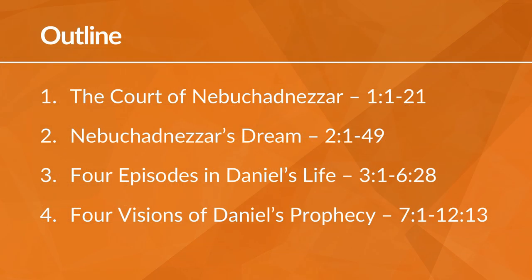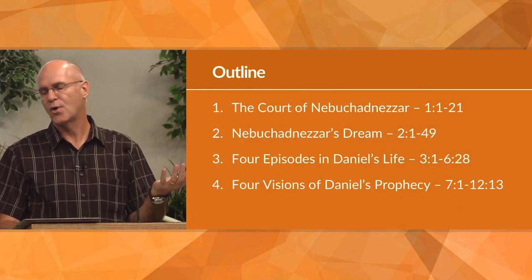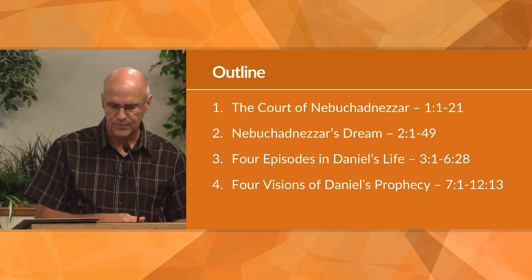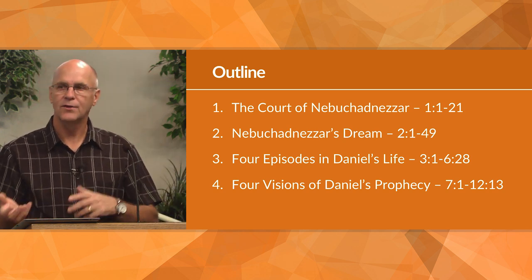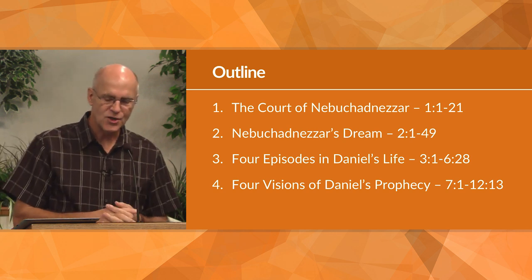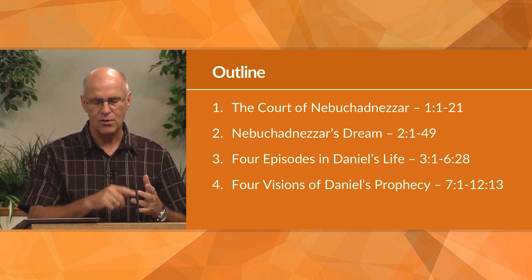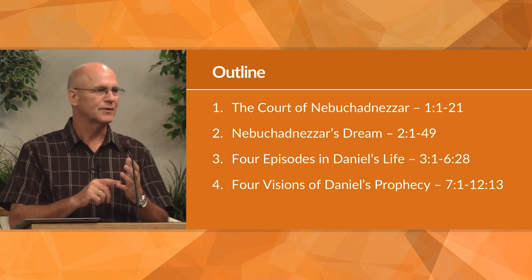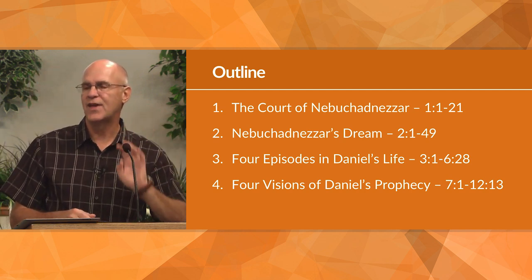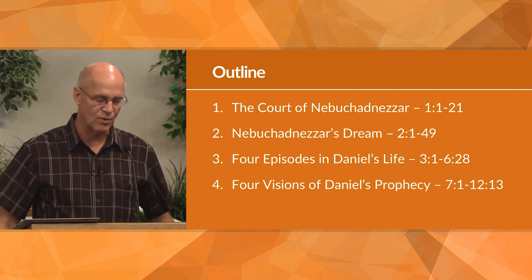The book breaks itself down into four parts. Part one covers the court of Nebuchadnezzar, where Daniel describes his surroundings when brought into the king's court. Part two covers Nebuchadnezzar's dream in chapter 2, verses 1 through 49. Part three covers four episodes in Daniel's life in chapters 3 through 6. Part four presents four visions of Daniel's prophecy in chapter 7, verses 1 to 28.